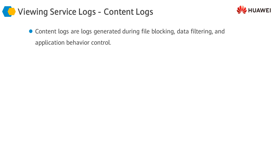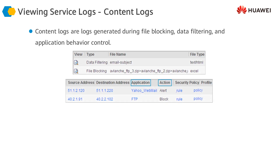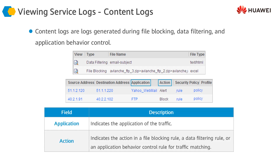Content logs are generated when traffic matches file blocking rules or data filtering rules defined in the data filtering policy, where the firewall is deployed between the internet and the network to be protected. In this way, application behavior is also controlled. Fields of a content log include type, file name, file type, source and destination addresses, application, action, security policy, and associated profile. The application field indicates the application of the traffic that matched a criteria, and action represents the response configured in the file blocking, data filtering, or application behavior control rules.